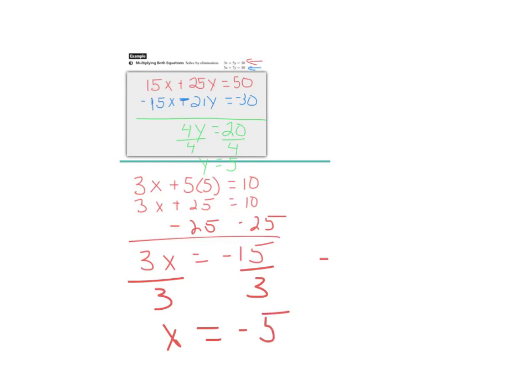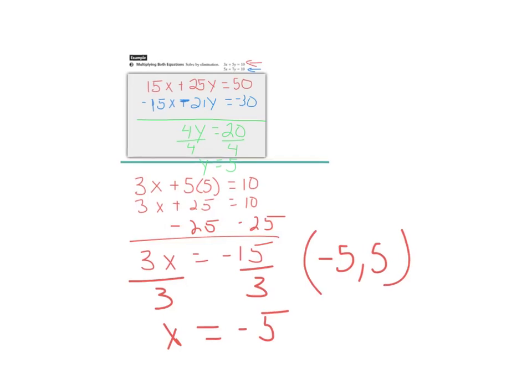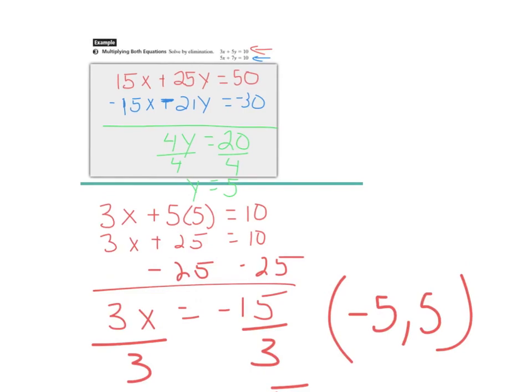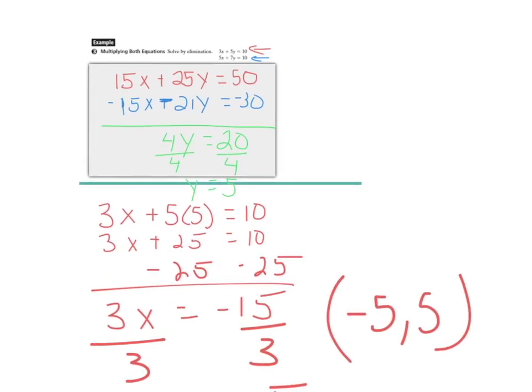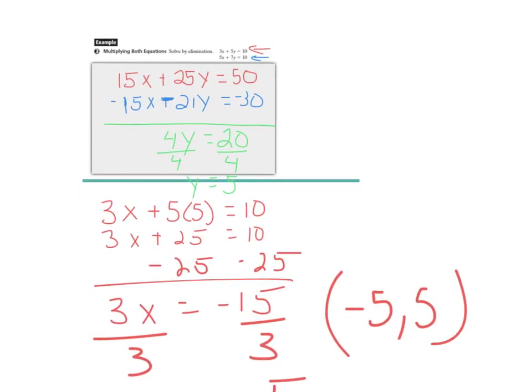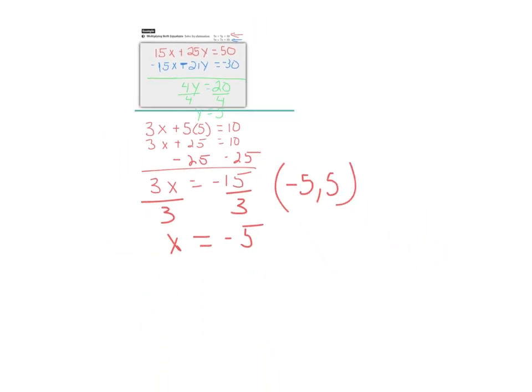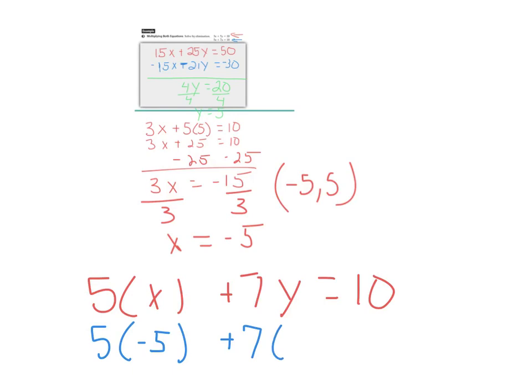And so my solution is (-5, 5). My x is negative 5, my y is 5. And if I wanted to check, looking at your first equation or the second equation, let's just use the second equation, 5x plus 7y equals 10. I'm going to replace the x with negative 5 and the y with 5.